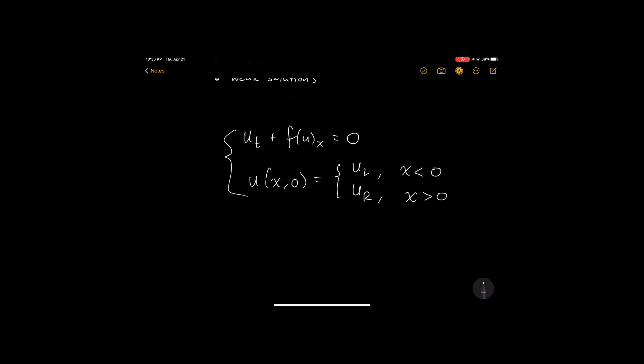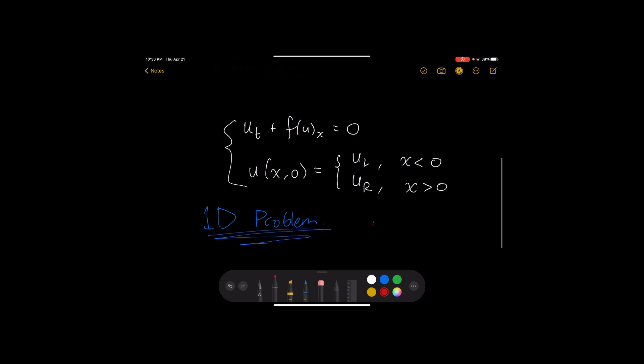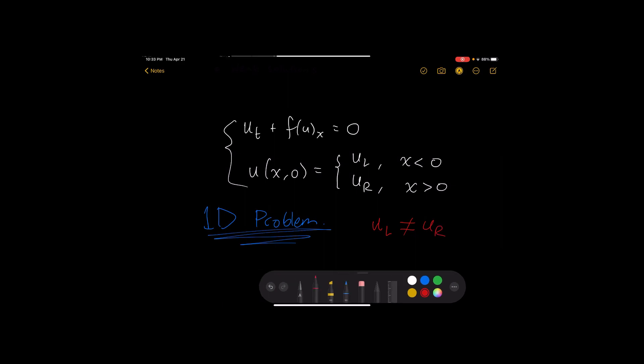One of the important things to note here is that this is a 1D problem. Okay, the Riemann problem is always a one-dimensional problem. So we're not taking the divergence of the flux, it's just a regular derivative and we have a left and a right state. And it's probably also helpful to mention that we are going to assume that u_left is not equal to u_right.